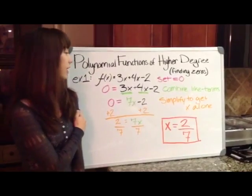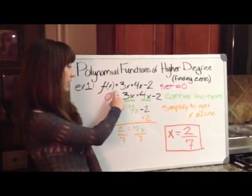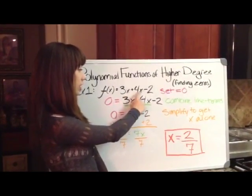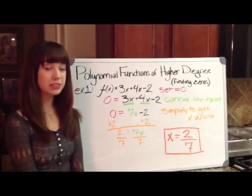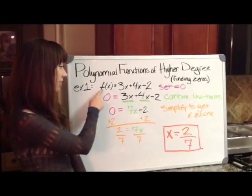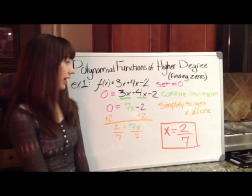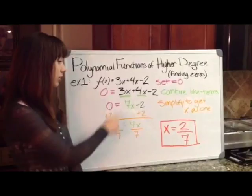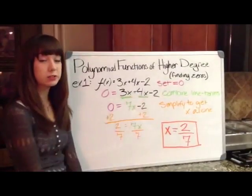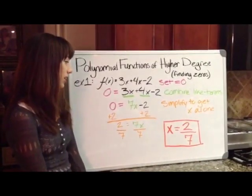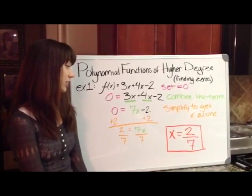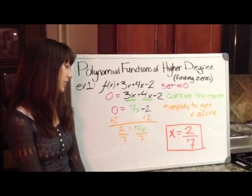Example 1, finding zeros. We have f(x) equals 3x plus 4x minus 2. Our first step is to set it equal to zero. So we change f(x) to zero and we get 0 equals 3x plus 4x minus 2. Our next step is to combine like terms. Our 3x and our 4x are like terms because they both have x in common.